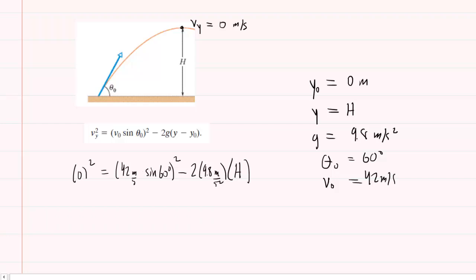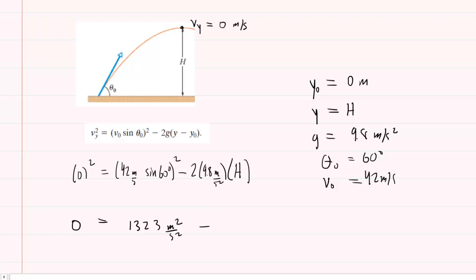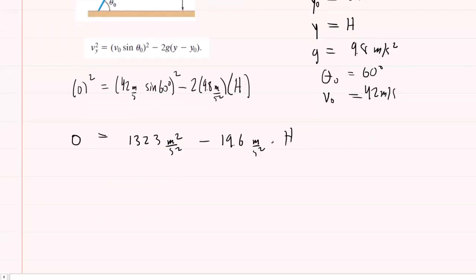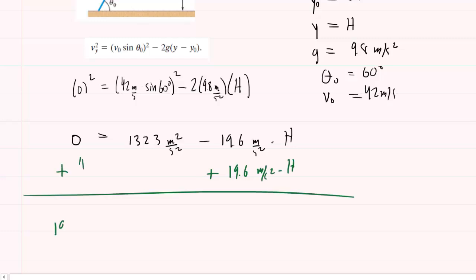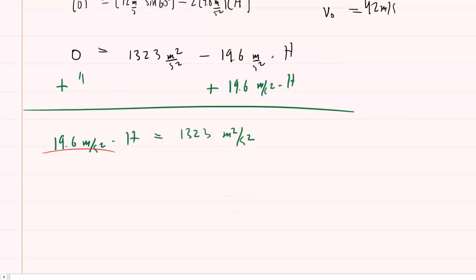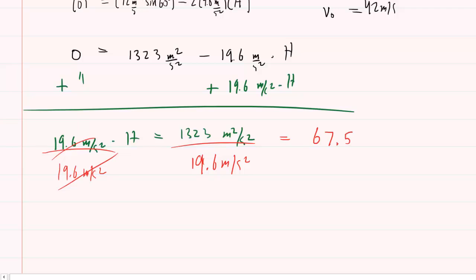Working out 42 times sine of 60, squared, gives 1323 meters squared per second squared. Multiplying 2 by 9.8 gives 19.6 meters per second squared times H. Adding the H term to both sides: 19.6 meters per second squared times H equals 1323 meters squared per second squared. Dividing both sides by 19.6 meters per second squared, the seconds squared cancel and meters squared divided by meters leaves meters. H equals 67.5 meters. This is the correct answer to part C.